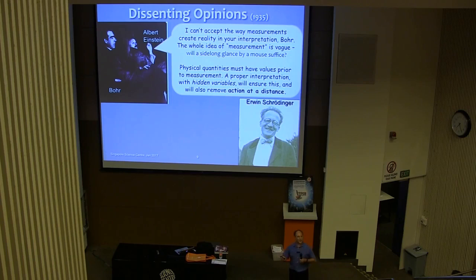You talk about measurement, what do you mean? Does it have to be a human making the measurement? Does it have to be a professor? Would an undergrad work? What about a mouse? Does the mouse have to look directly? Could it just be glancing? It's all very vague. So physics shouldn't be vague. That's what Einstein thought. Physical quantities must have values prior to measurement. We don't want to introduce this idea of measurement into physics, Einstein thought. A proper interpretation must have hidden variables, things which we can't directly see, but which will give values, determine the values that we get when we make measurements. And so Einstein was saying that if we come up with a better theory with hidden variables, it will ensure that physical quantities have values even when we're not measuring them, even before we measure them, and moreover, it will remove action at a distance.